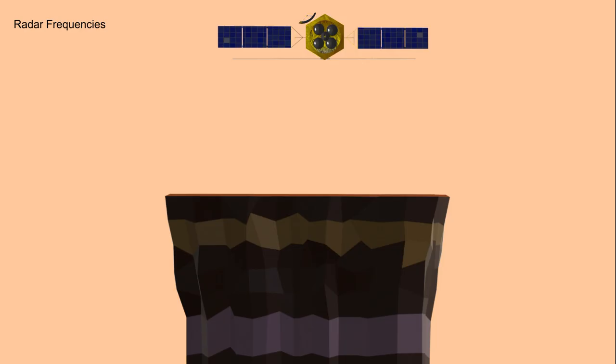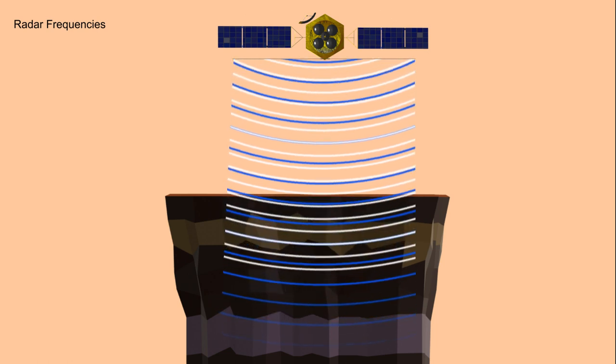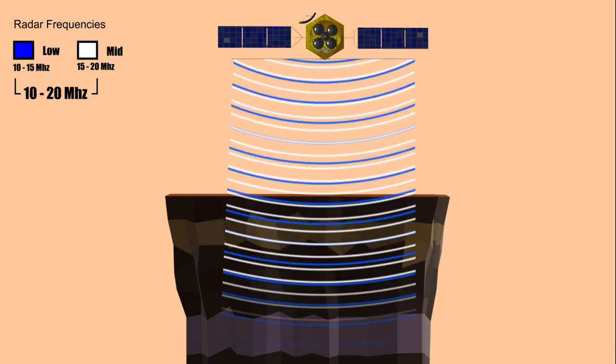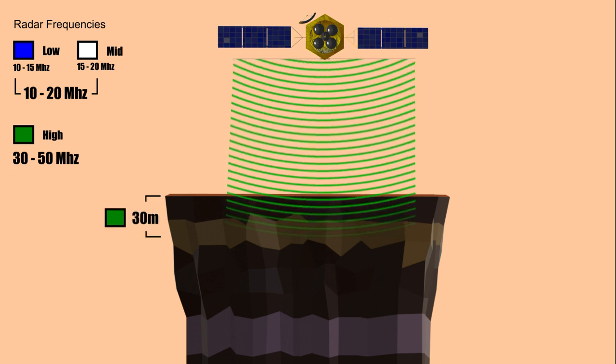In order to enhance the detail of the data collected, Tianwen-1 sends out radar pulses in two frequency bands. One is 10 to 15 megahertz or 15 to 20 megahertz, and the other is 30 to 50 megahertz. Using two frequency bands allow MOSIR to vary its vertical resolution between 30 to 7.5 meters, at the cost of having a smaller penetrating depth. The penetrating depth in Martian soil is over 100 meters, and in water ice, it's over 1000 meters.